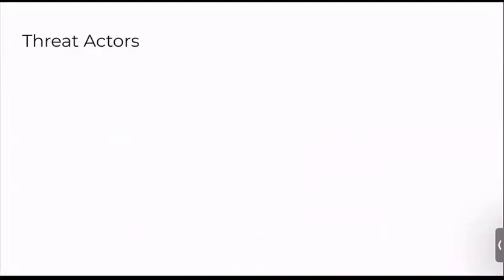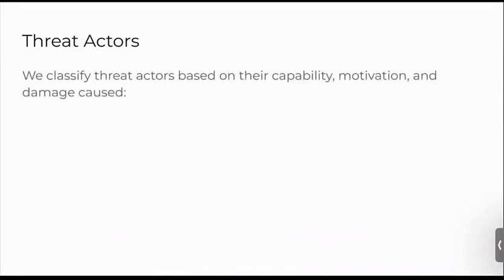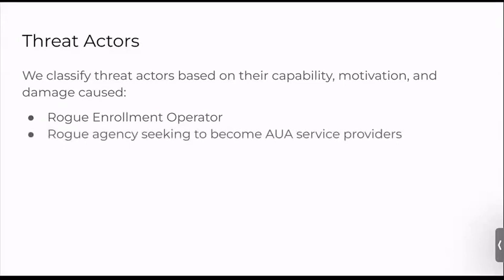Before looking at security and privacy, let's consider possible threat actors, classified by capability, motivation, and possible damage. A rogue enrollment operator — the first barrier of entry to an individual's information — can enroll individuals with faulty data or copy their data to enroll a fake person instead. A rogue agency seeking to become an authentication service provider may conduct identity forgery; for example, a cellular agency operator could authenticate twice using Anita's details while she applies for a SIM card, then keep or sell that connection.